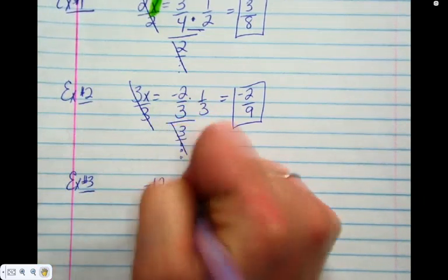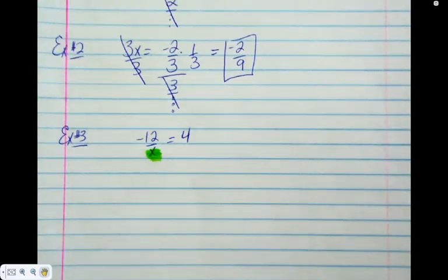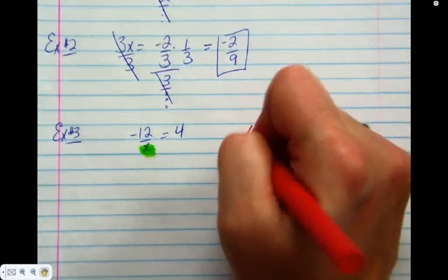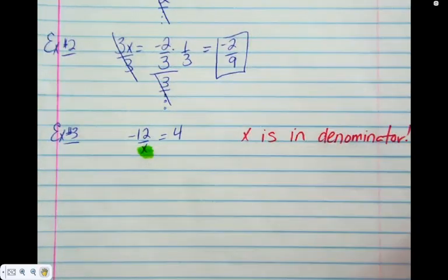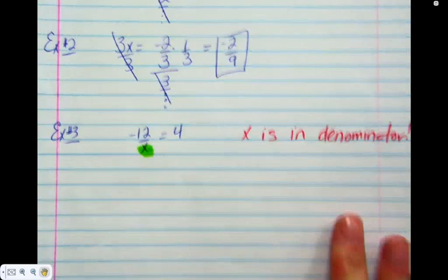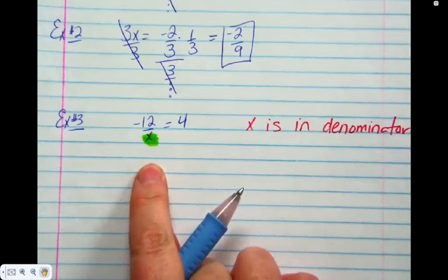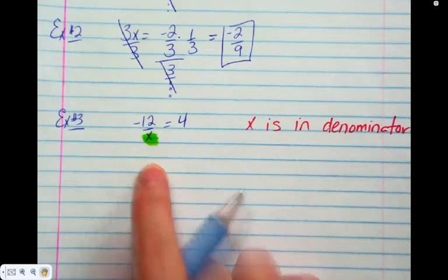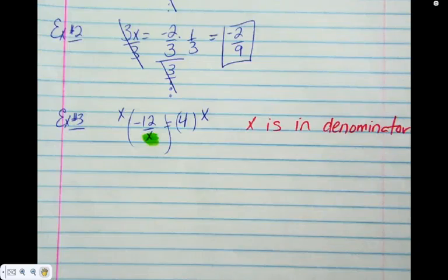Number 3, negative 12 over x equals 4. How is this one different than the first two? You have to multiply. More specifically, where is the x? In the bottom. So let's just make a note. This is going to be the steps when x is in the bottom or x is in the denominator. Here, x is in the bottom, so that's a division by x. What's the opposite of dividing something by x? So I'm going to multiply both sides by x, just to get it out of the bottom, get rid of it.